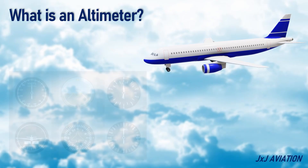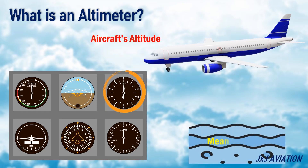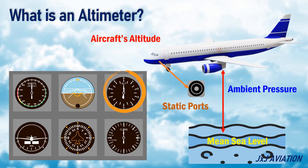The altimeter is an aircraft instrument which is used to measure and indicate an aircraft's altitude above a specific reference, like for example the mean sea level. The altimeter uses the static ports which are installed on the aircraft. The ambient pressure, measured from the static ports, is used for indicating the aircraft's altitude.